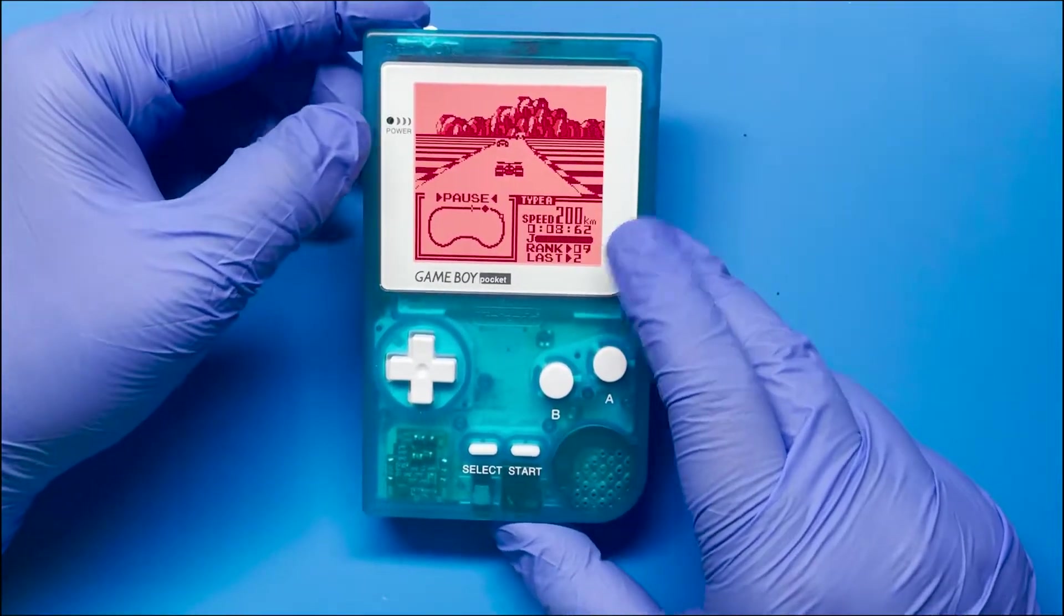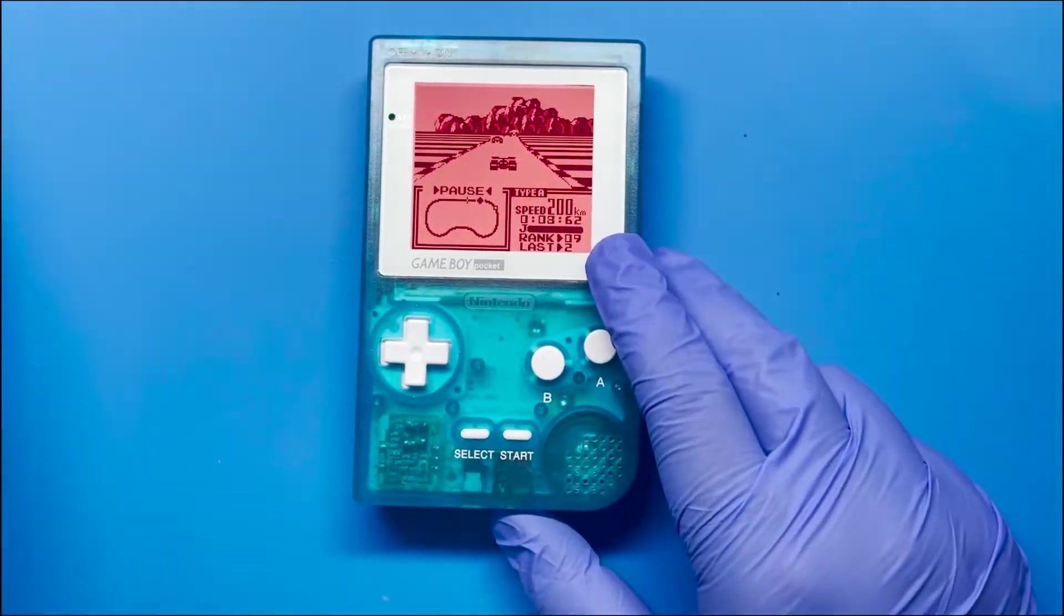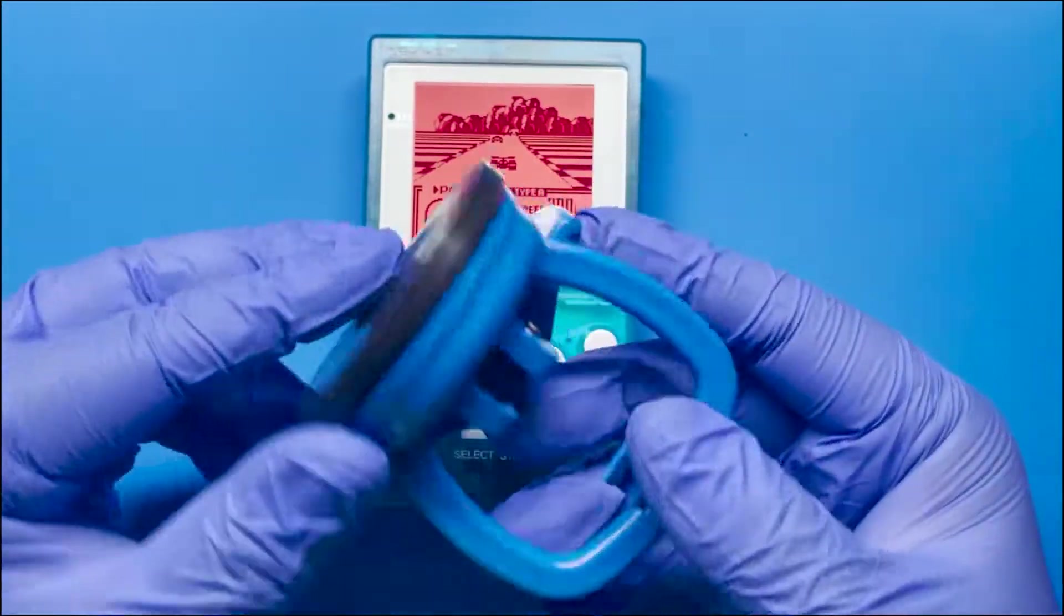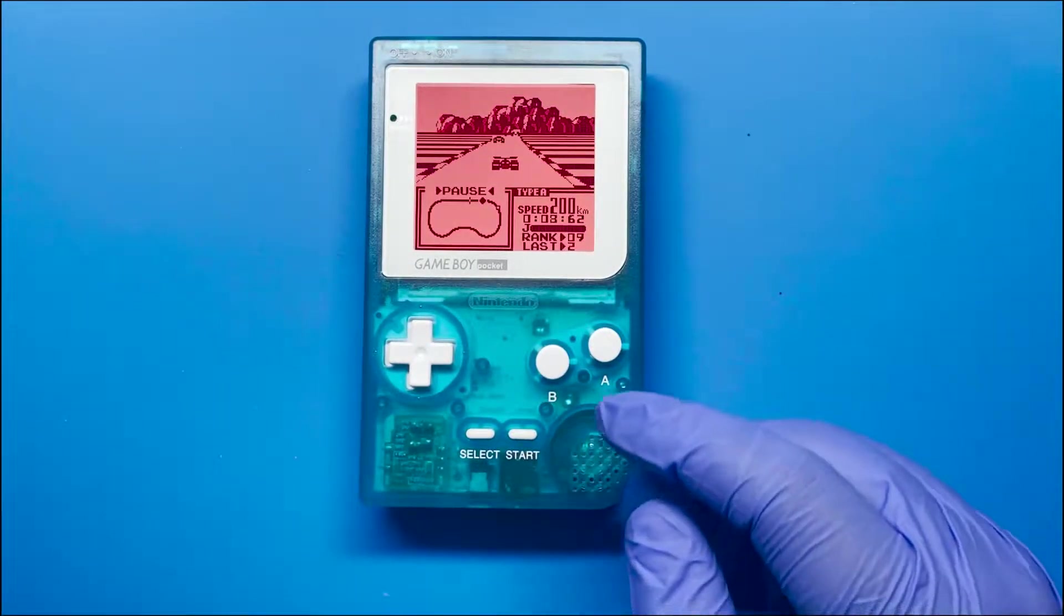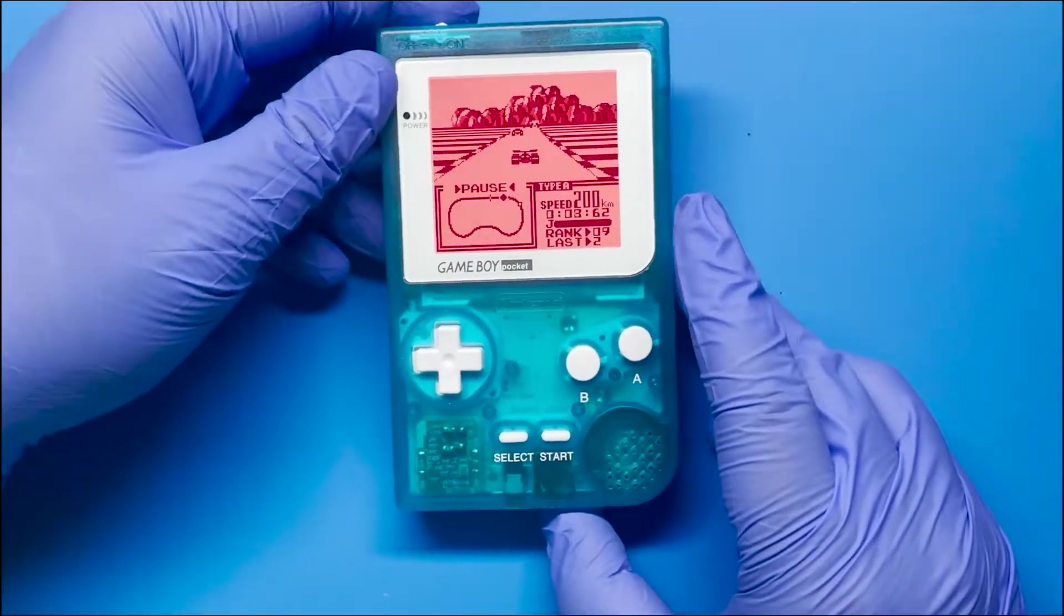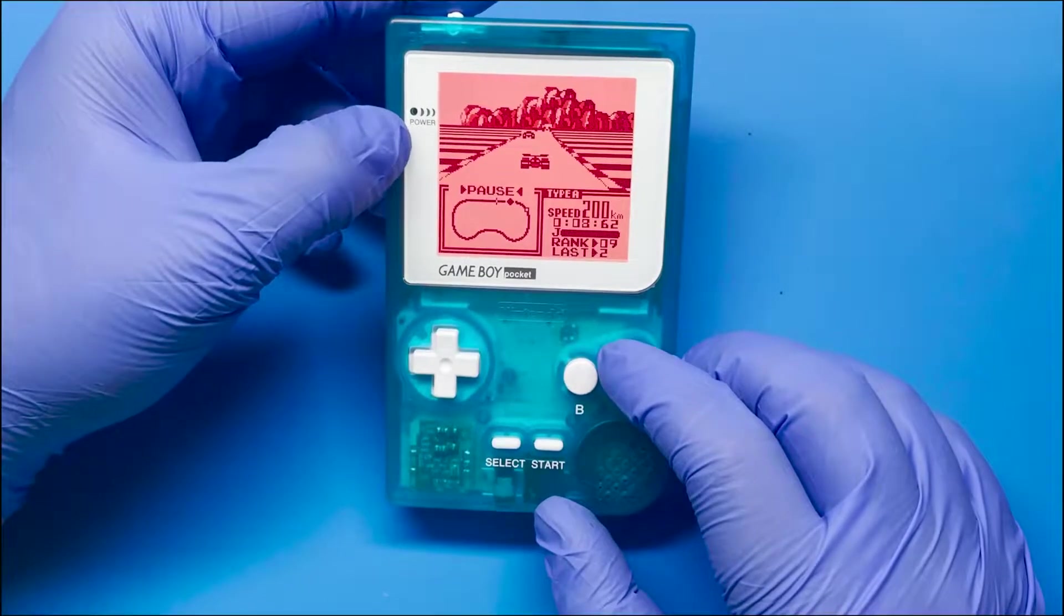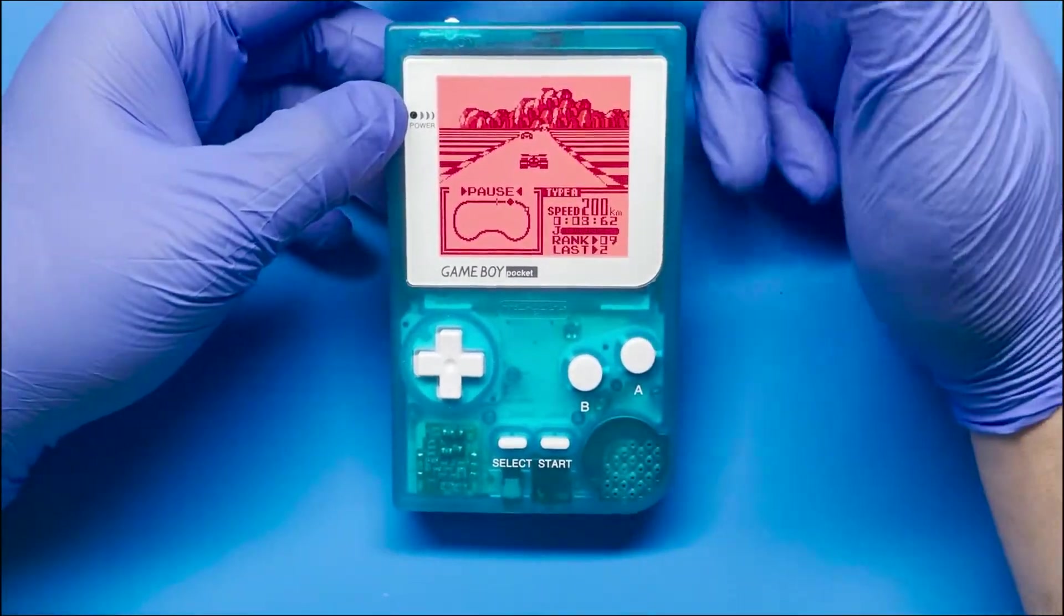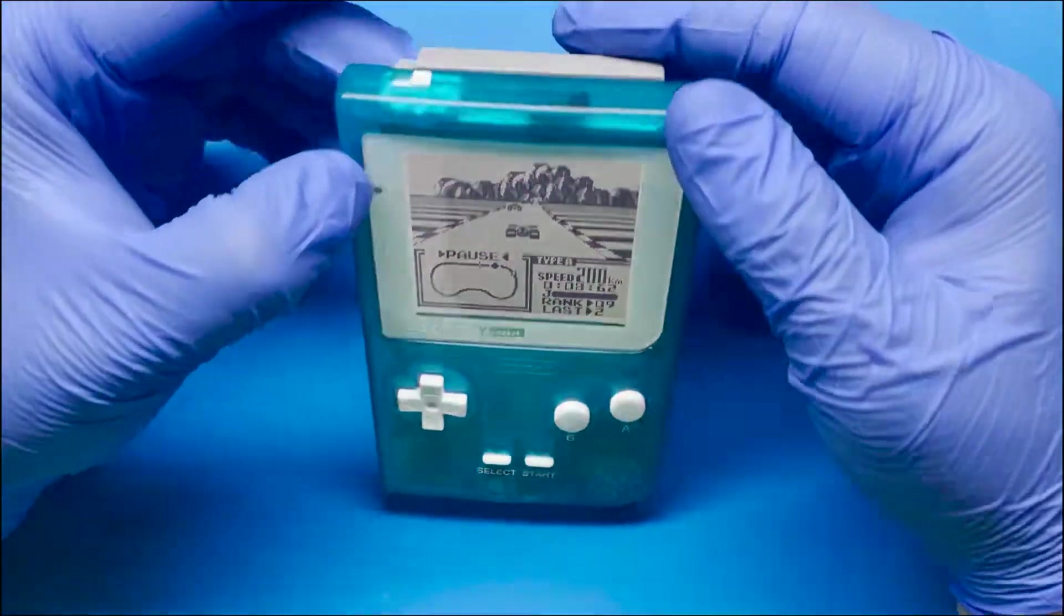So I did make the mistake in ordering one with the power light here, but hopefully it's something that they can overlook. If it's really that big of an issue, I can replace it. Normally I use a tool like this, it's a suction cup, and just kind of place it and then remove it from there, only if it's really that big of an issue. But honestly I don't think it's that bad.